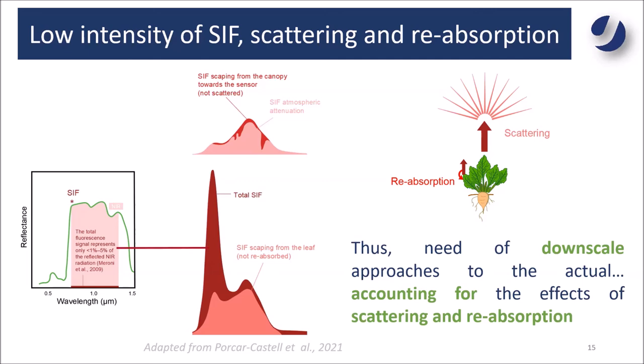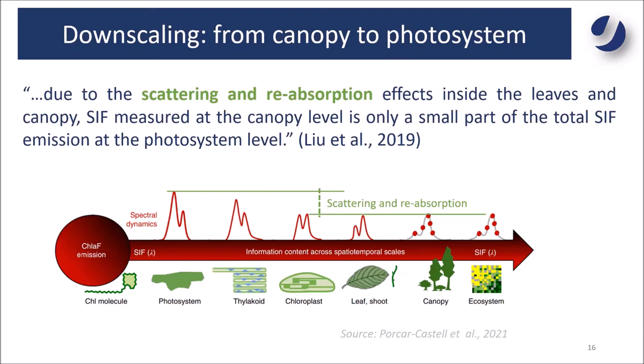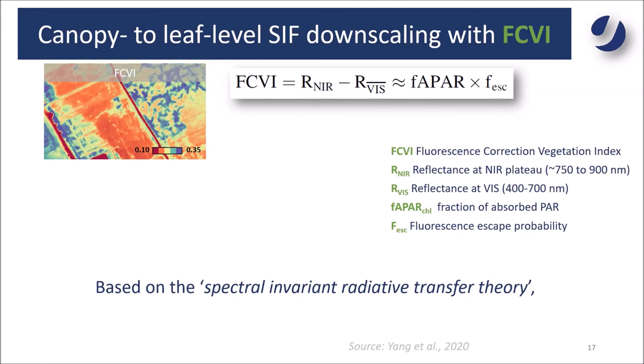This next slide shows again how the small signal gets even smaller as it leaves the vegetation — starting from the chlorophyll molecule level all the way up to the sensor or ecosystem level. It is a very low intensity red light. The main concepts I'm going to mention for downscaling SIF can also be applied to other remote sensing variables if that is your interest.